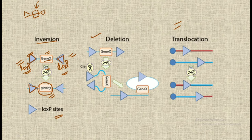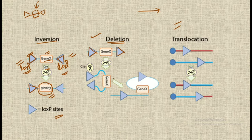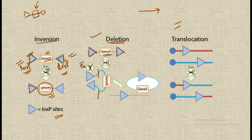Talking about the second arrangement — deletion. When the arrows representing loxP sites are in the same direction, in the same line of order, gene X gets deleted. The Cre recombinase carries out deletion of gene X, and as a result, in the final product, gene X between the two loxP sites is removed from the gene.